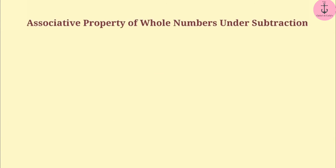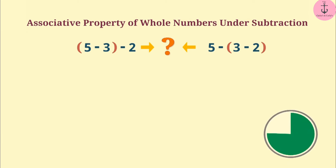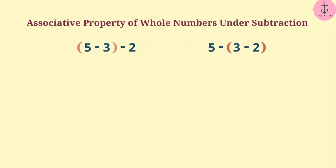Now let's understand the associative property of whole numbers under subtraction. Like addition, is subtraction of whole numbers also associative? Think for a while. If we group the numbers one way, we first subtract 3 from 5 and then subtract 2 from the result, giving an answer of 0. However, if we group the numbers the other way, the answer will be 4.